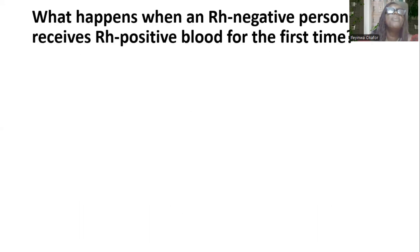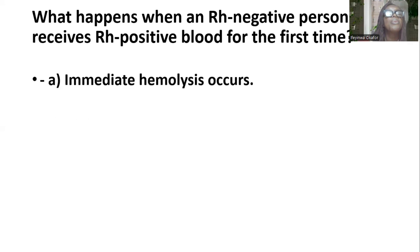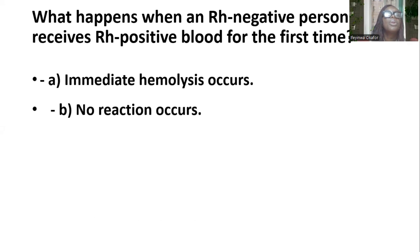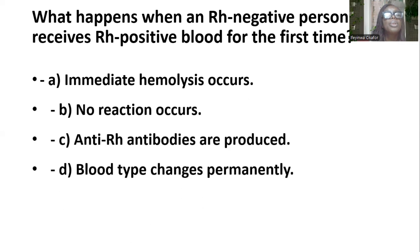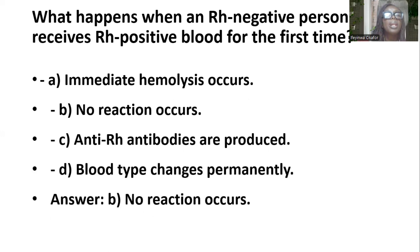What happens when an RH-negative person receives RH-positive blood for the first time? Options are: immediate hemolysis occurs; no reaction occurs; anti-RH antibodies are produced; blood type changes permanently. And the answer is B — no reaction occurs on first exposure.